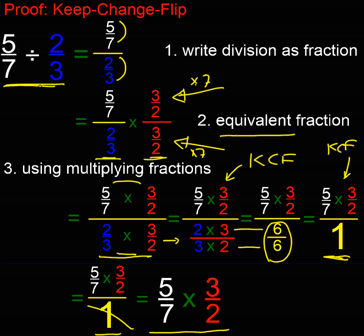So what have we done? We've proved that 5 sevenths divided by 2 thirds will always equal 5 sevenths multiplied by 3 over 2. And these are the steps that are really important, aren't they? The equivalent fraction step there.